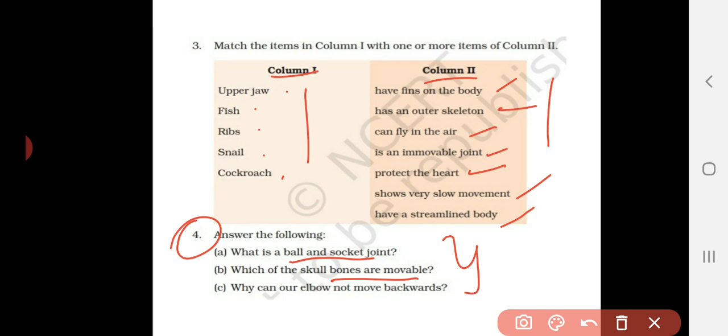Third question: why can our elbow not move backwards? So we know that our elbow is made up of a particular joint which can move only in one direction, okay? Our elbow moves towards the forward, not in the backward direction. So mention that, and also mention where the other particular joint is present which can move backward, not in the forward direction.